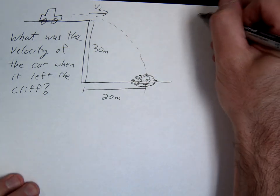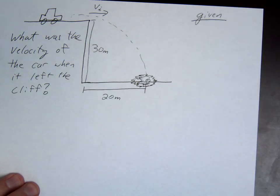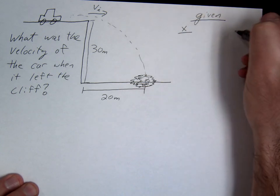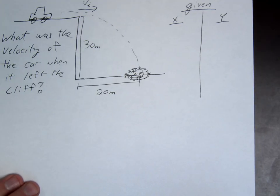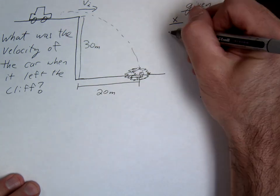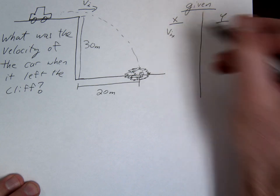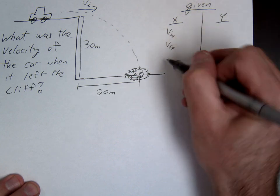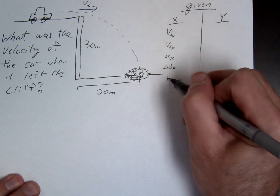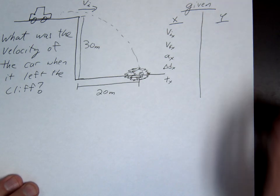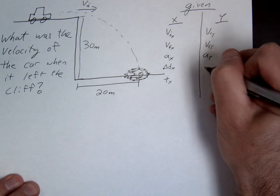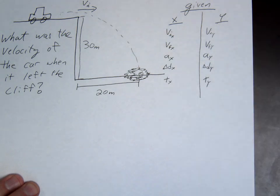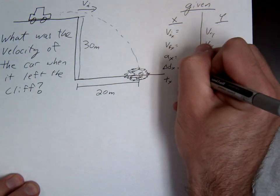Alright, so the way we're going to approach this problem is really the same as we have been doing. The only difference is we now have two dimensions. We have our x dimension, we have our y dimension. And just as I mentioned, we're going to keep them isolated. We're going to keep them independent of each other. So we're going to set up givens for both x and y. So let's see what we know in this problem.